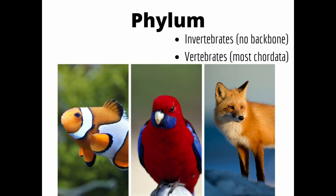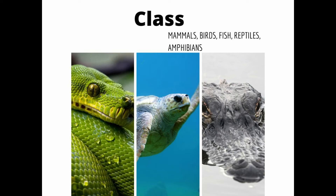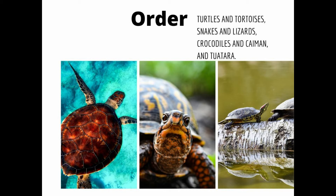All the animals in this picture are in the same phylum — they have a backbone. Let's get even more specific. Look at the different classes of vertebrates: that includes mammals, birds, fish, amphibians, and reptiles. We're looking specifically at reptiles now — all the pictures here are in the class reptiles. There are a couple of orders in reptiles, including turtles and tortoises, snakes and lizards, crocodiles and caiman, and tuatara.